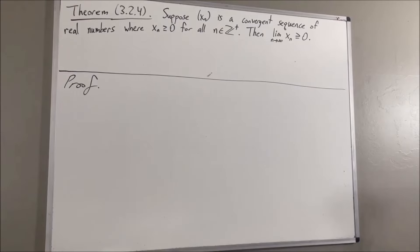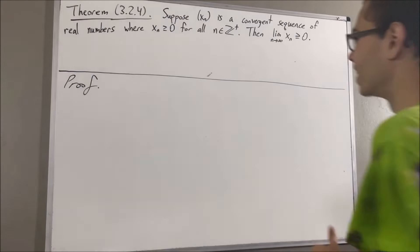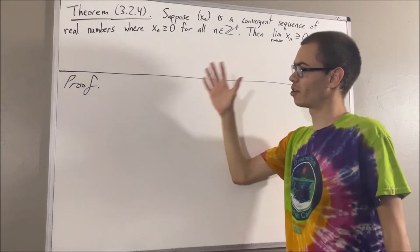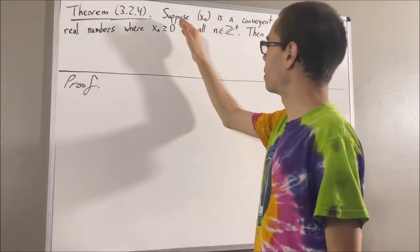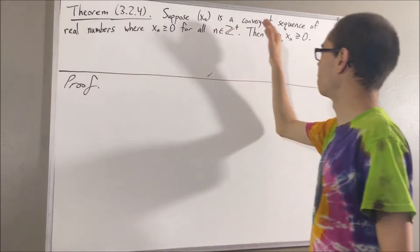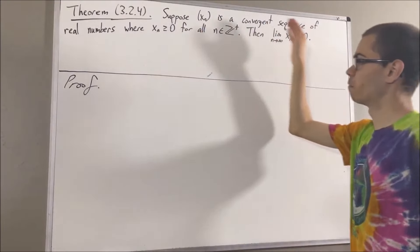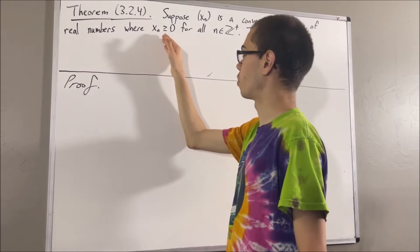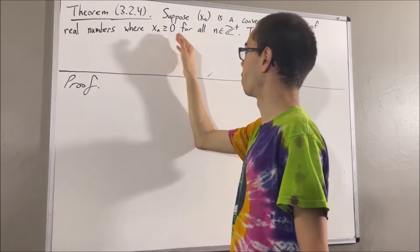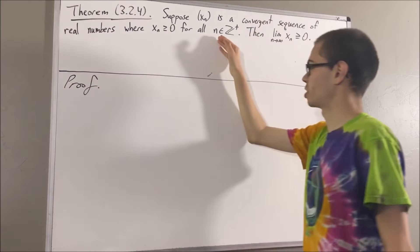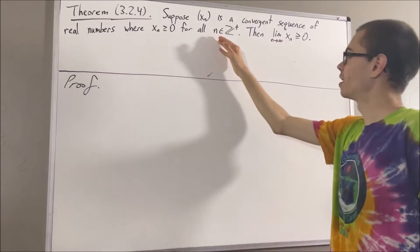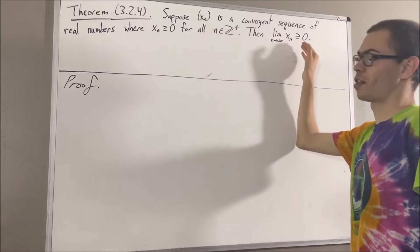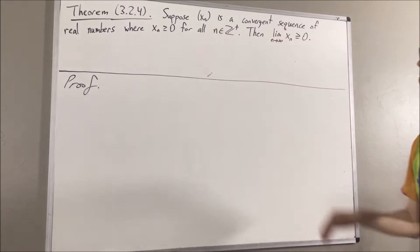Hello! In this video, we are going to prove the following theorem. Suppose xn is a convergent sequence of real numbers where xn is greater than or equal to zero for all positive integers n. Then, the limit of xn is greater than or equal to zero.